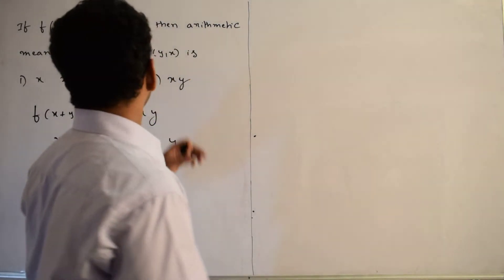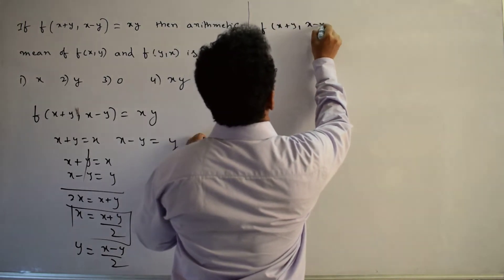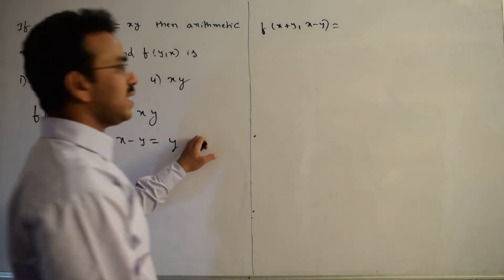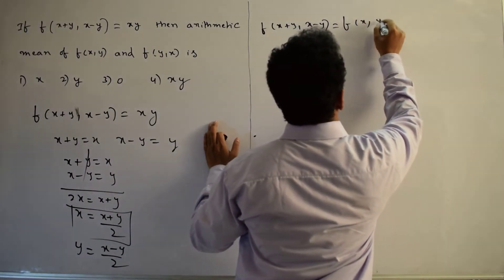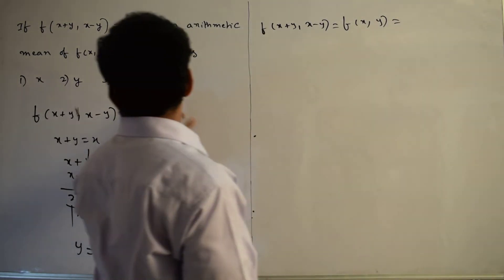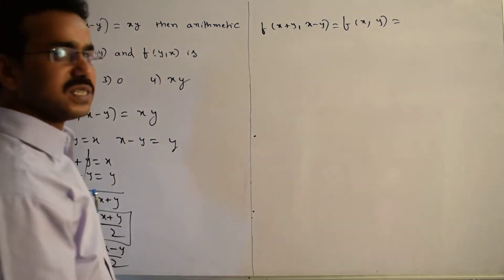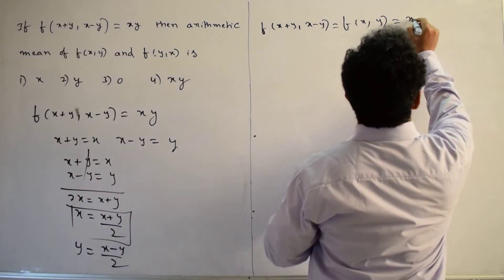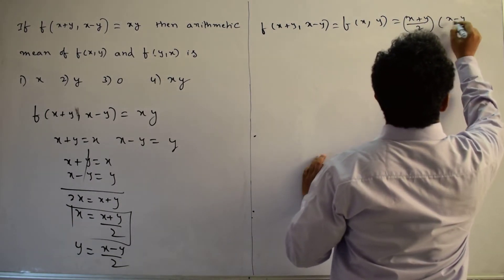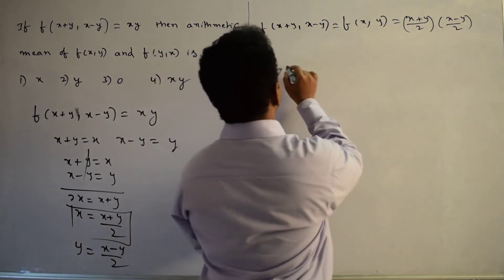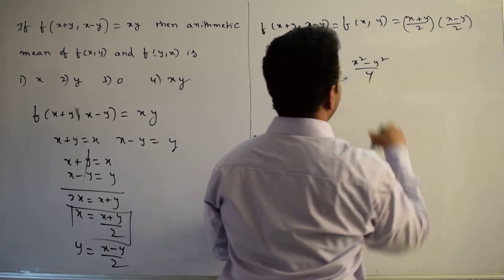So we have the values of x and y when x+y equals x and x-y equals y. Substituting back into the given function f(x+y, x-y) = xy, we replace x with (x+y)/2 and y with (x-y)/2, giving f(x,y) = (x+y)/2 × (x-y)/2 = (x²-y²)/4.